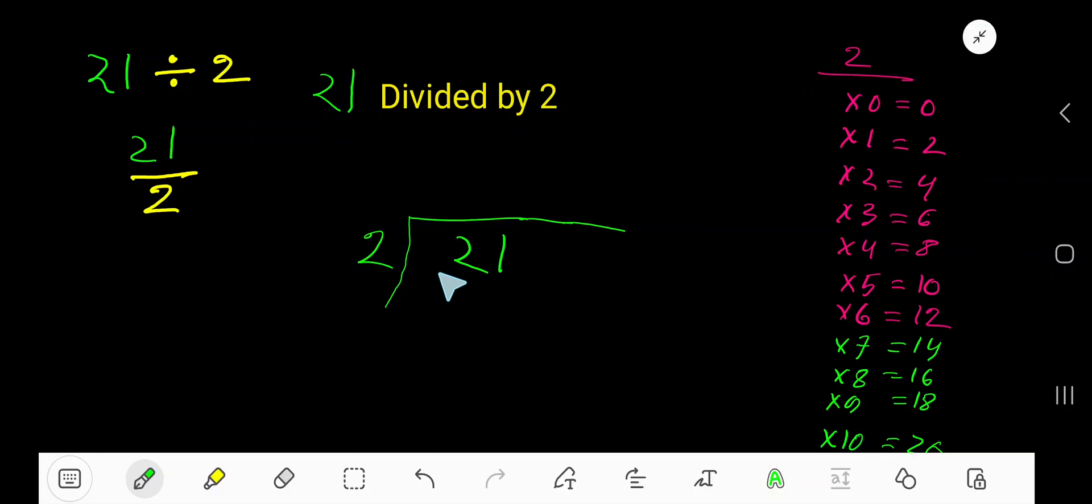21 divided by 2. 2 goes into this 2 how many times? 1 times. Write 1. 1 times 2 which is 2. 1 times 2, 2. Subtract 0.